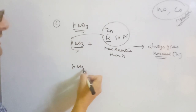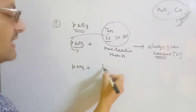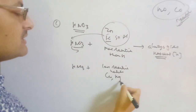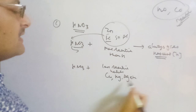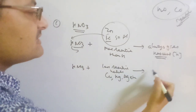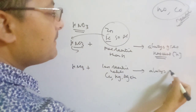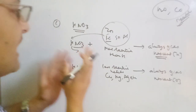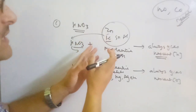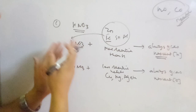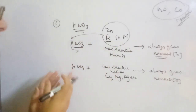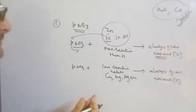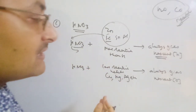Similarly, when HNO₃ reacts with less reactive metals than hydrogen — like copper, mercury, or silver — these metals when reacted with HNO₃ always give nascent oxygen. So when HNO₃ reacts with more reactive metals like zinc, iron, tin, and aluminum, they always give nascent hydrogen. When HNO₃ gives reaction with copper, mercury, and silver — which are less reactive than hydrogen — they always give nascent oxygen.